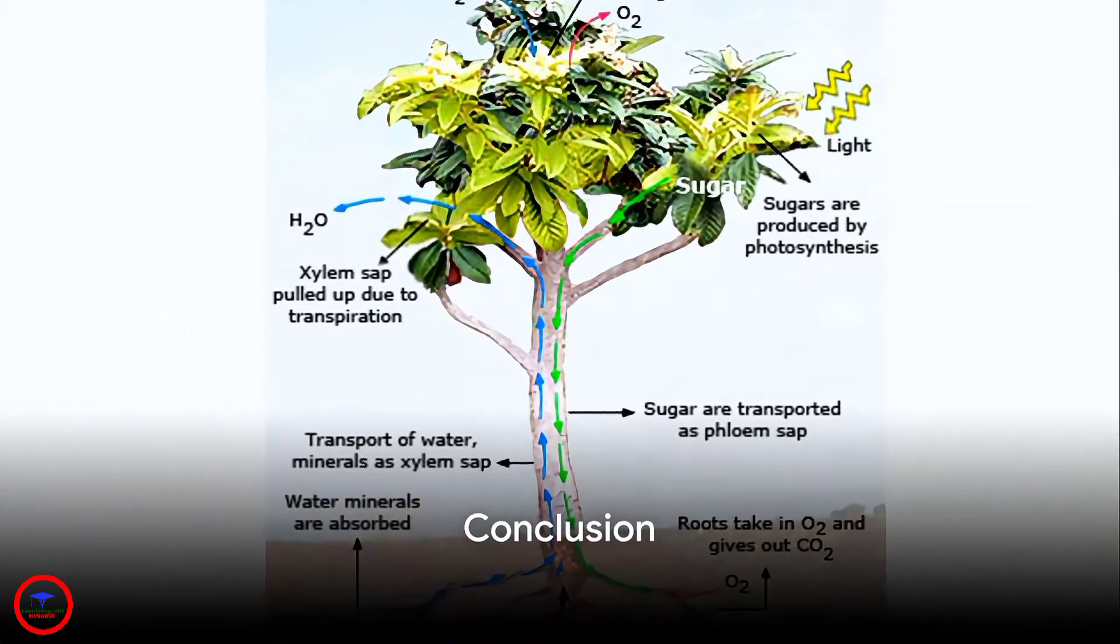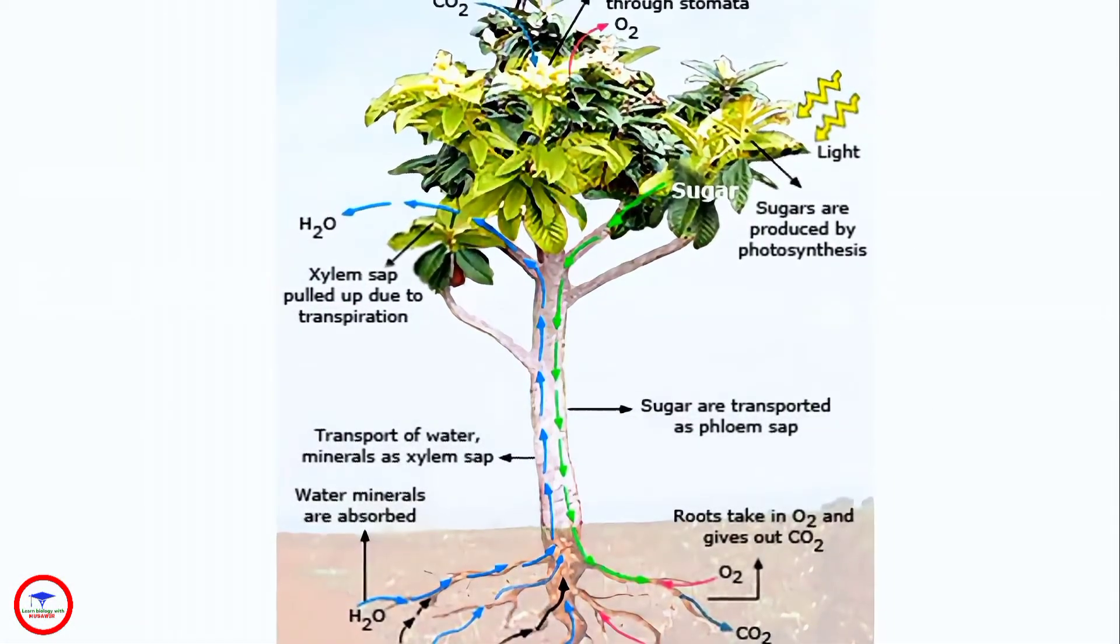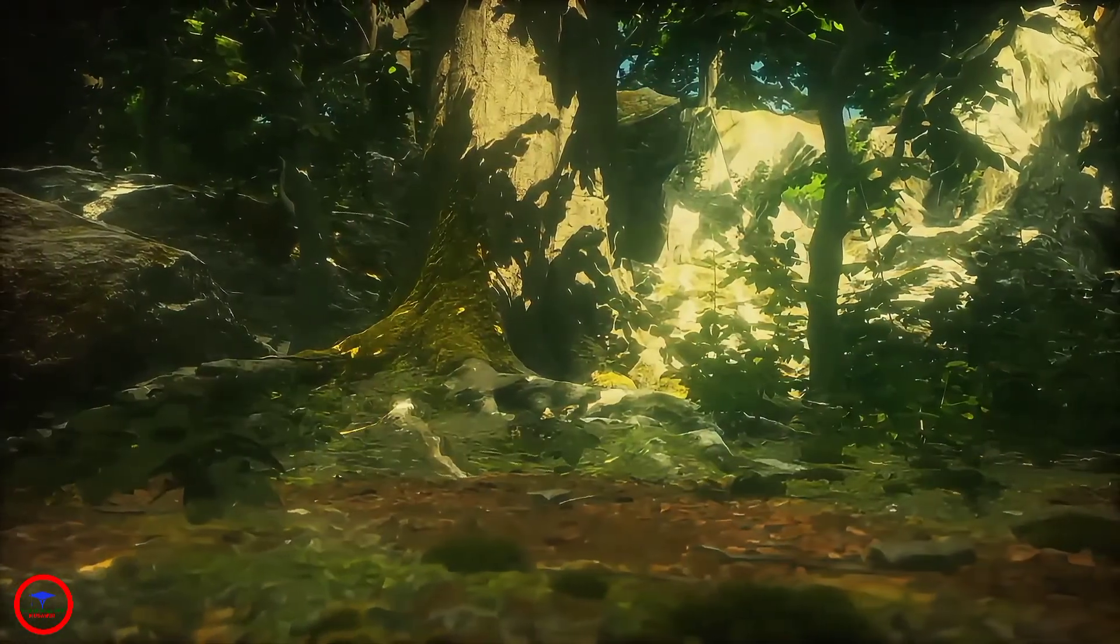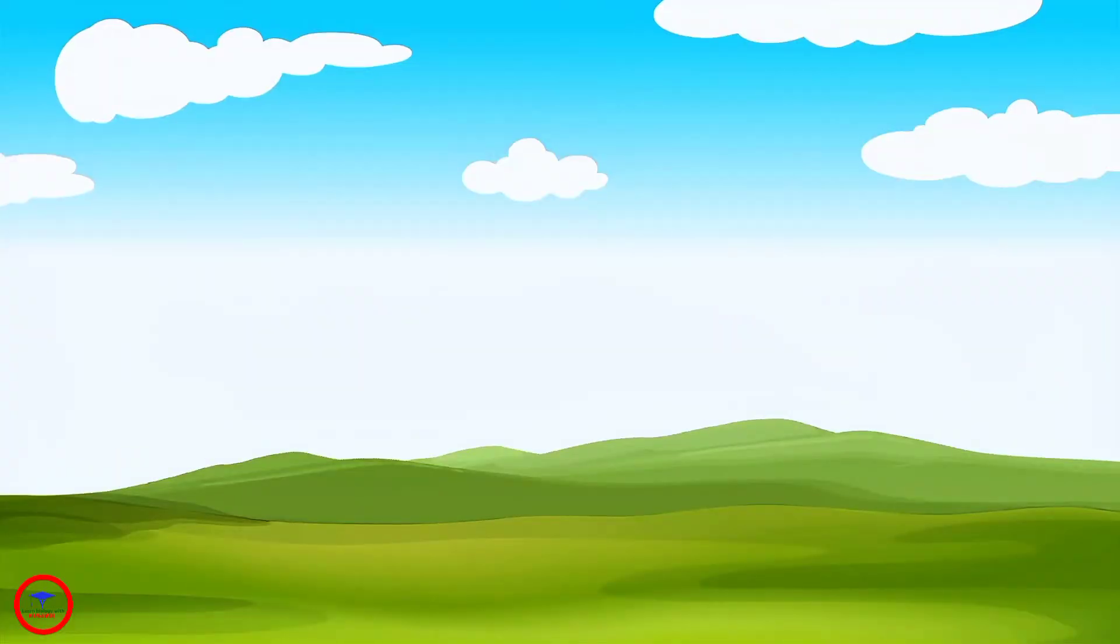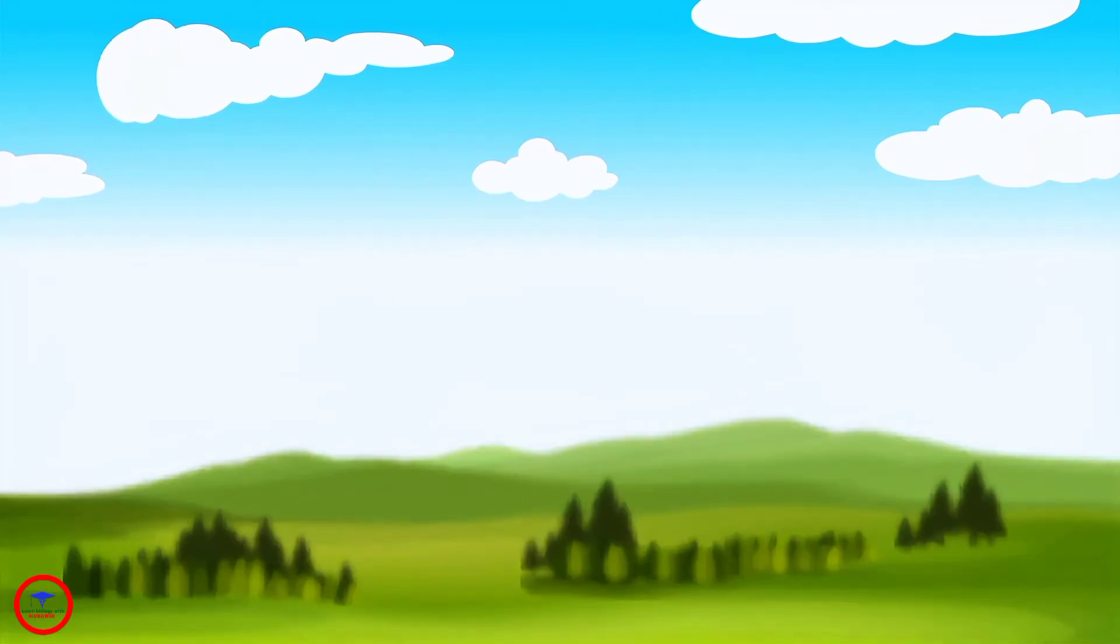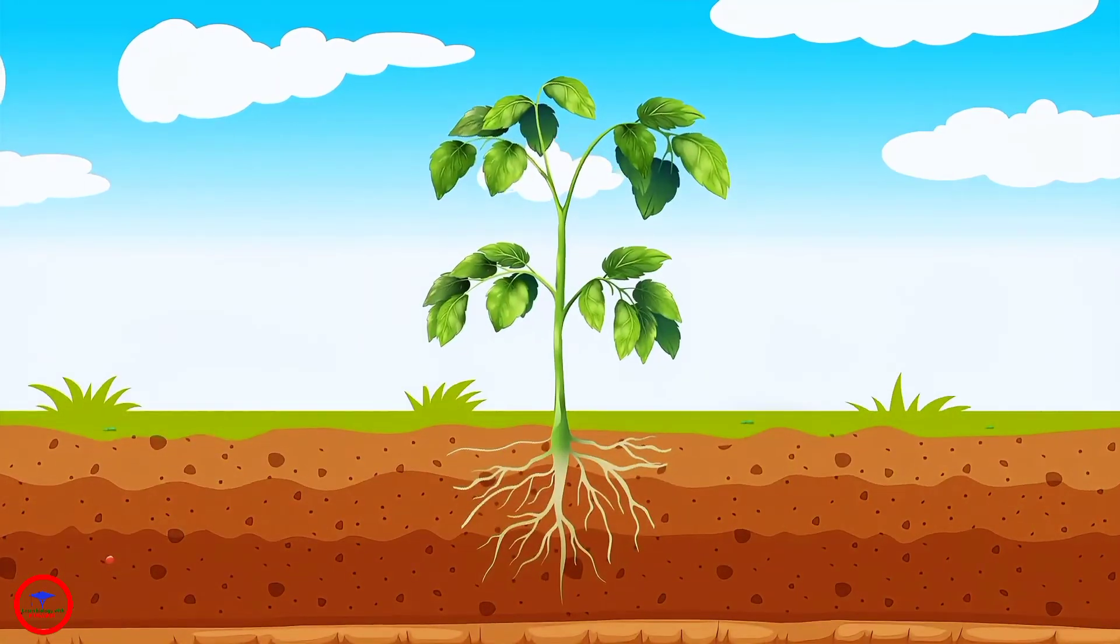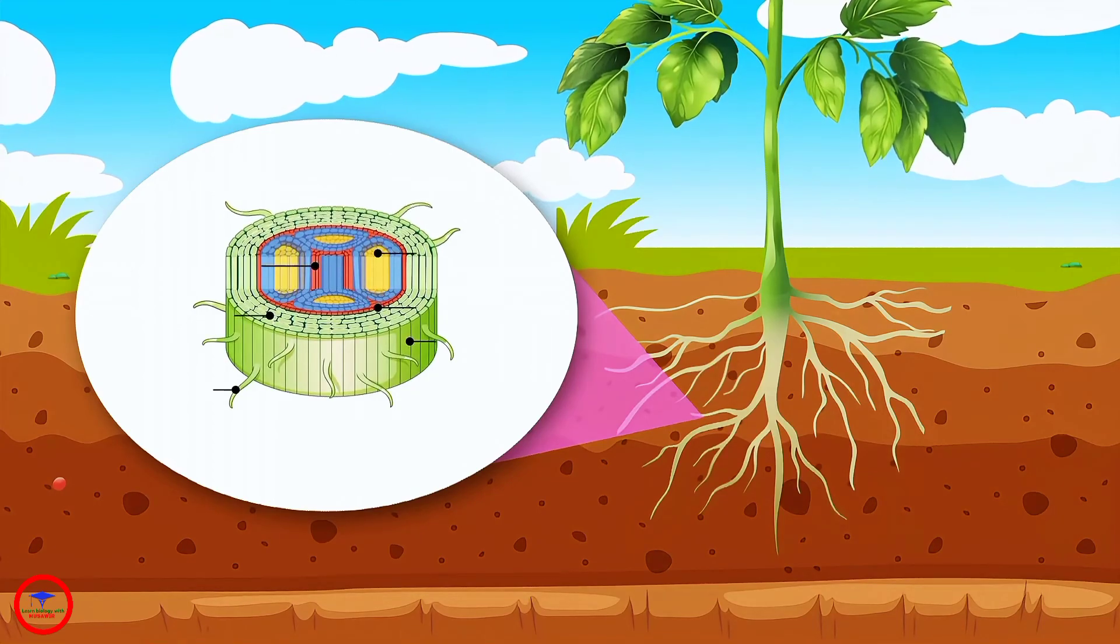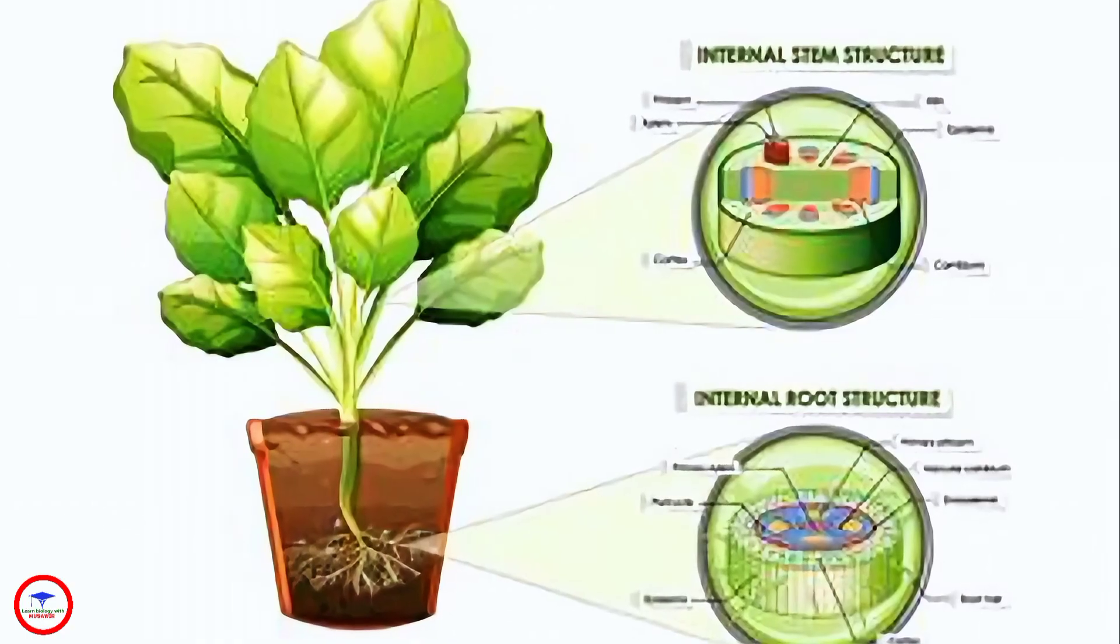So, in essence, the plant transport system is a marvel of nature, a powerhouse working round the clock to ensure the survival and growth of the plant. From the humble root hairs to the mighty xylem and phloem, every component plays a vital role in this intricate process, proving once again that the beauty of nature lies in its complexity.